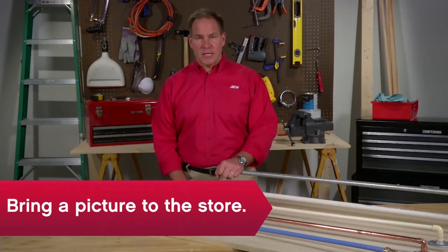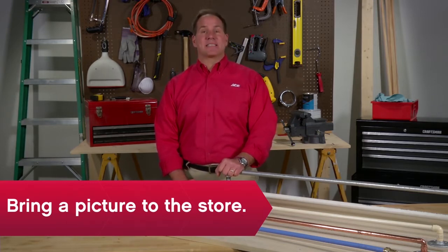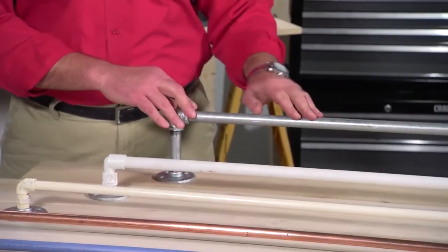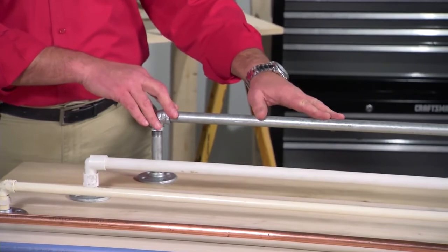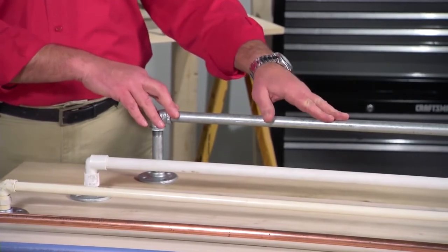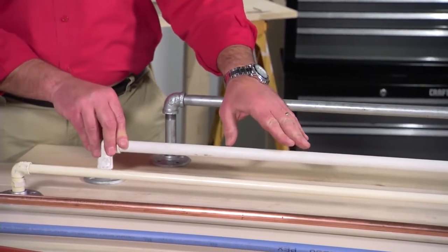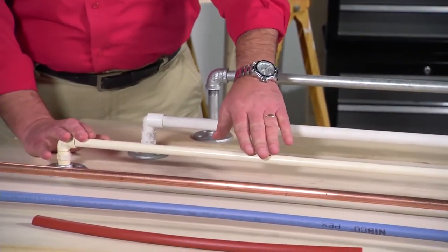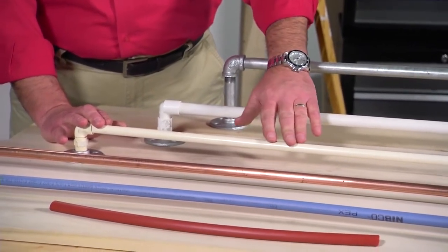You'll need to figure out what kind of material your pipes are made from and choose a repair product that's compatible. Here are some indicators to help you identify what you've got. This is a piece of galvanized piping here. It's typically silver and you'll see it run for hot and cold water. White PVC can be used for cold water, drain and vent. CPVC is yellower in color and it can be used for hot and cold water.